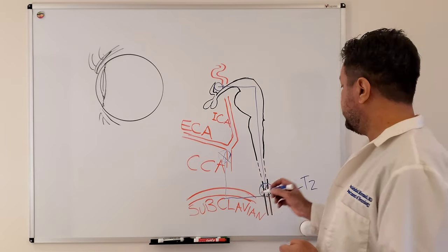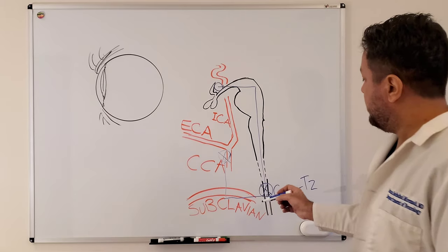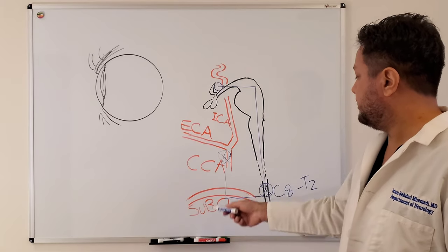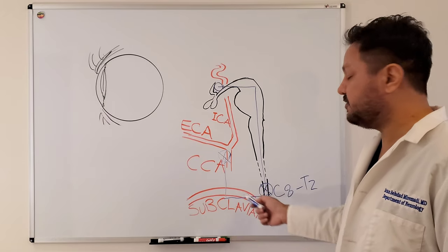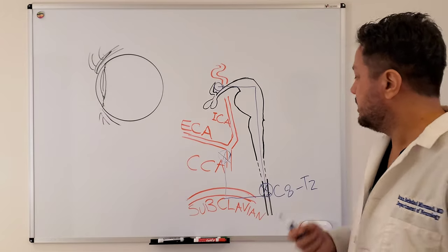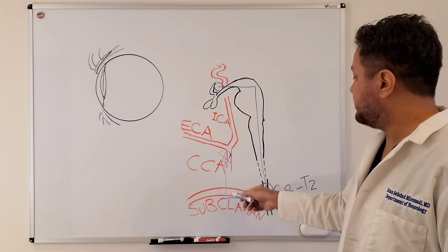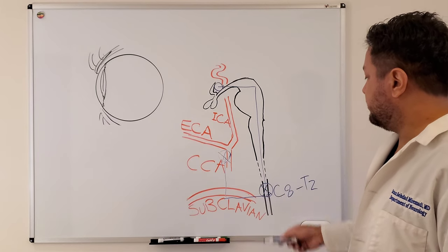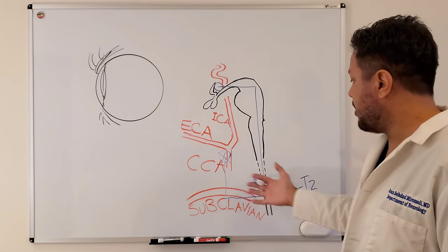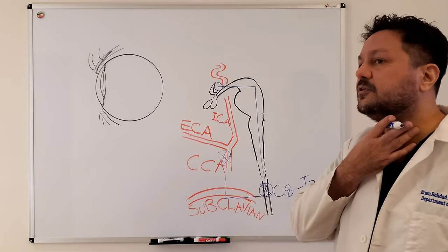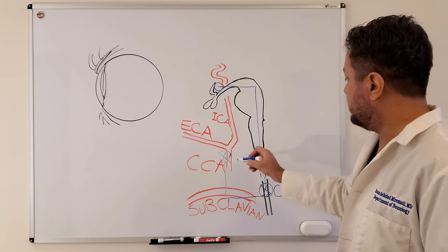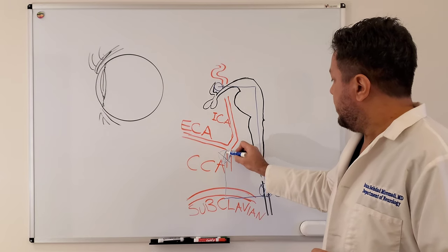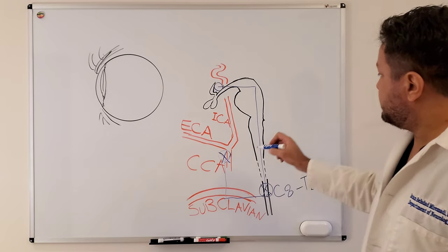So the second order of neuron or the preganglionic neuron—if there is a lesion, for example if there is a Pancoast tumor or if there is a lesion in the upper lungs, that can affect the second order of neuron. Also, trauma to areas in the lower neck or the medial neck can cause that as well.